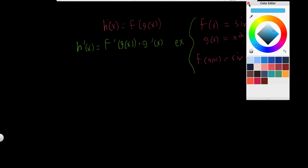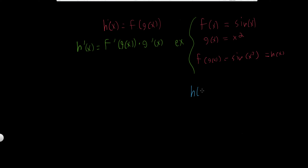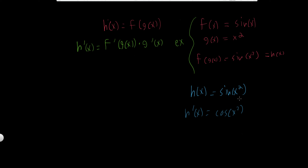Let's utilize this formula and take the derivative of the green example here. We have h of x equals sine of x squared. This is a function inside a function where the outside function is sine of x and the inside function is x squared. We first take the derivative of the outside: the derivative of sine of x is cosine of x, so we get cosine of x squared. Then we multiply by the derivative of the inside, which is 2x.